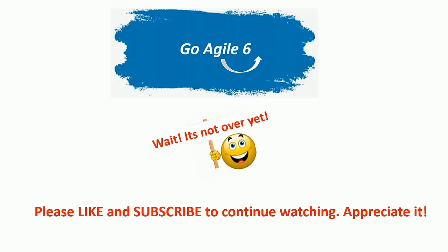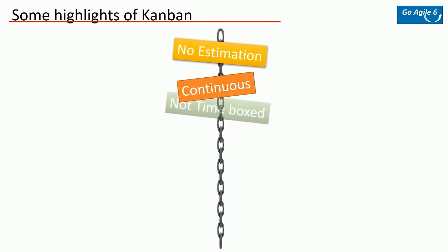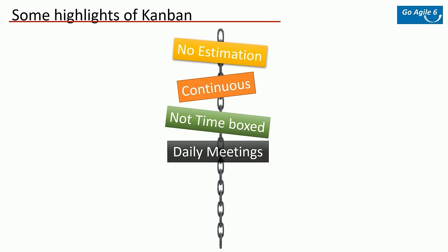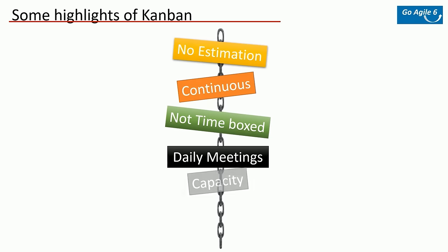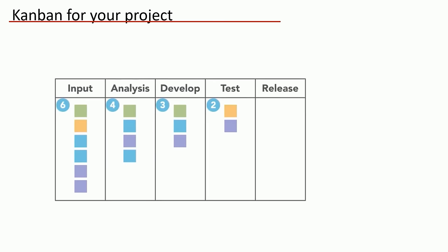Typically in Kanban there's no estimation — it is continuous or ongoing tasks with no time-boxed iterations. There are daily meetings but focused mainly on impediments. The focus is on delivery based on capacity rather than overloading developers. The issues, tickets, or tasks are put into an indefinite pipeline — in the agile world we call it backlog. There's a single indefinite backlog and developers pull tickets from it and process them.